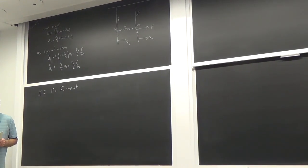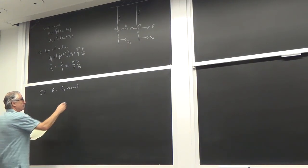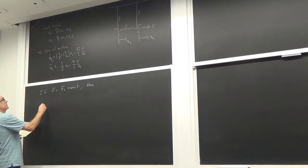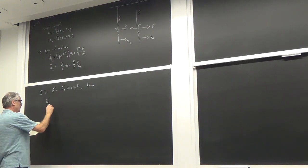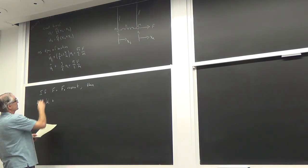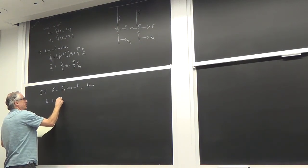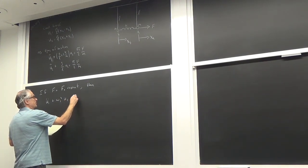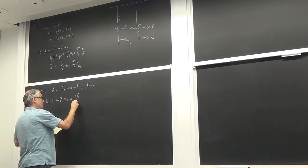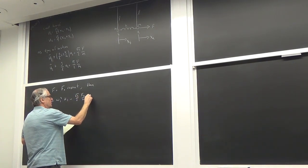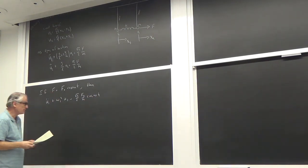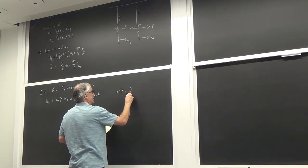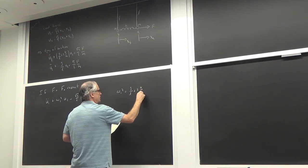Our force is a sinusoidally varying force — sine of omega t. The differential equations become: u1 double dot plus omega_1^2 u1 equals (√2/2) · (F_0/m) · cos(omega t), where omega_1^2 = g/l + 2k/m.